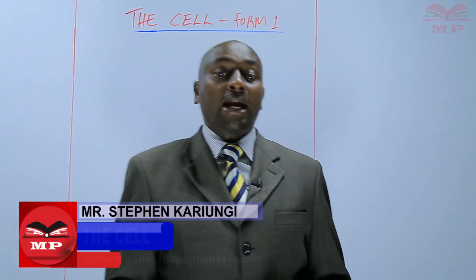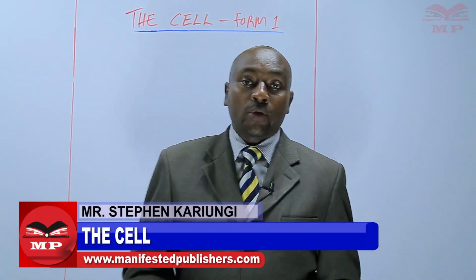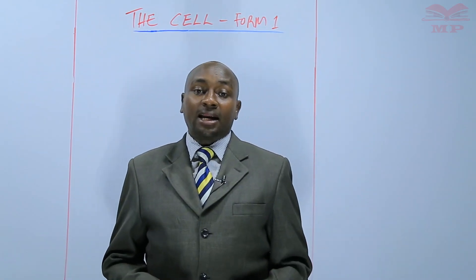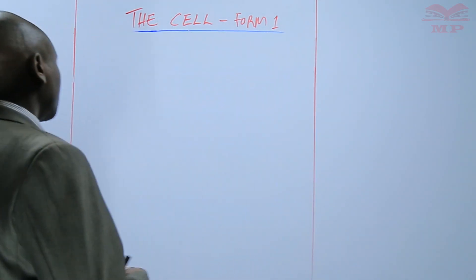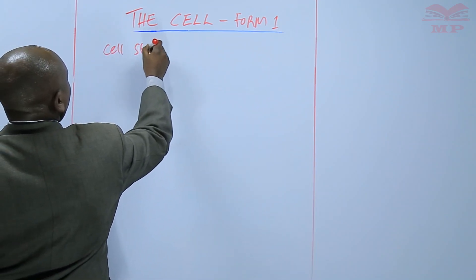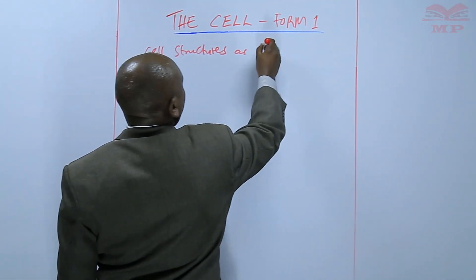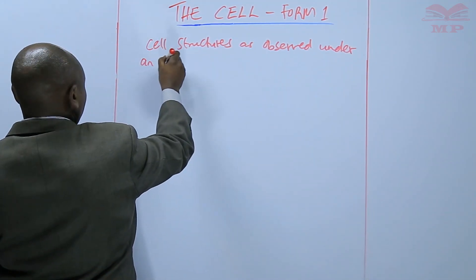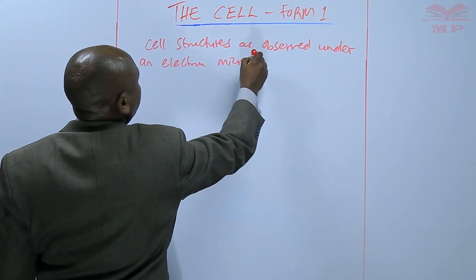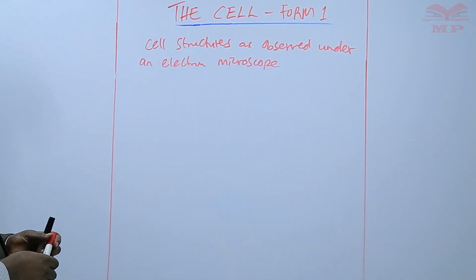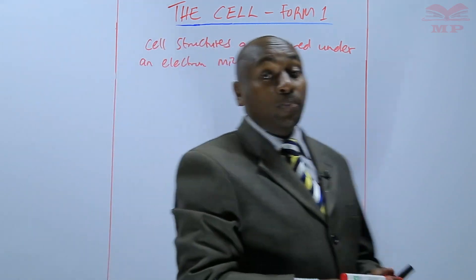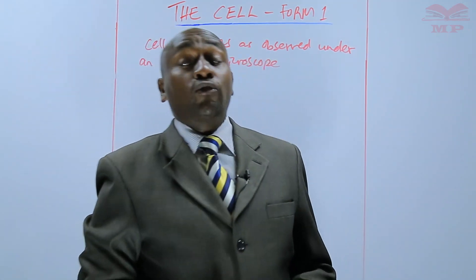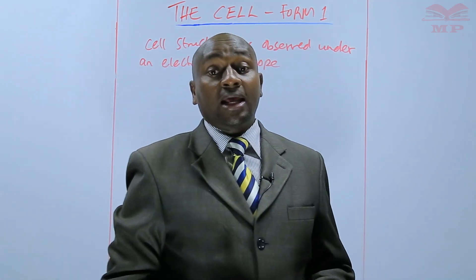Today we continue with Biology Form 1 and we are going to study the cell structures as observed under an electron microscope. We earlier learnt that an electron microscope has a higher magnification and therefore it shows more details as compared to a light microscope.